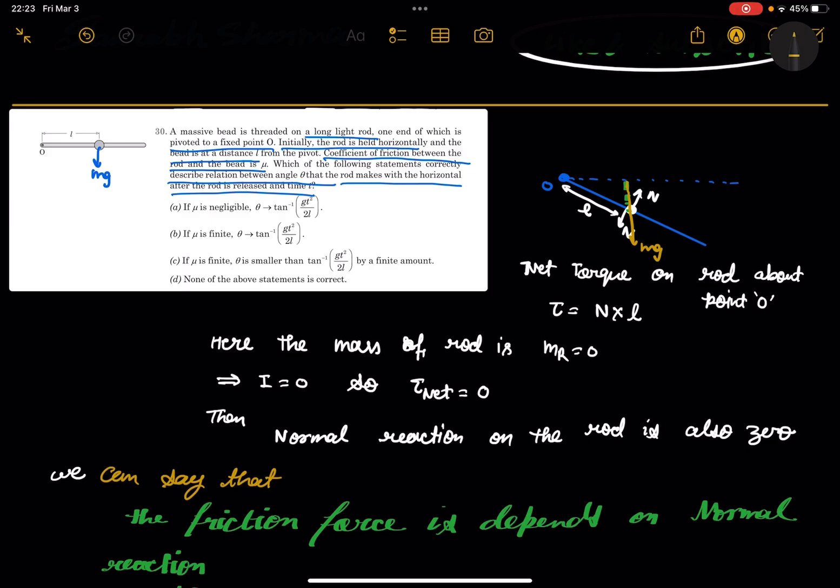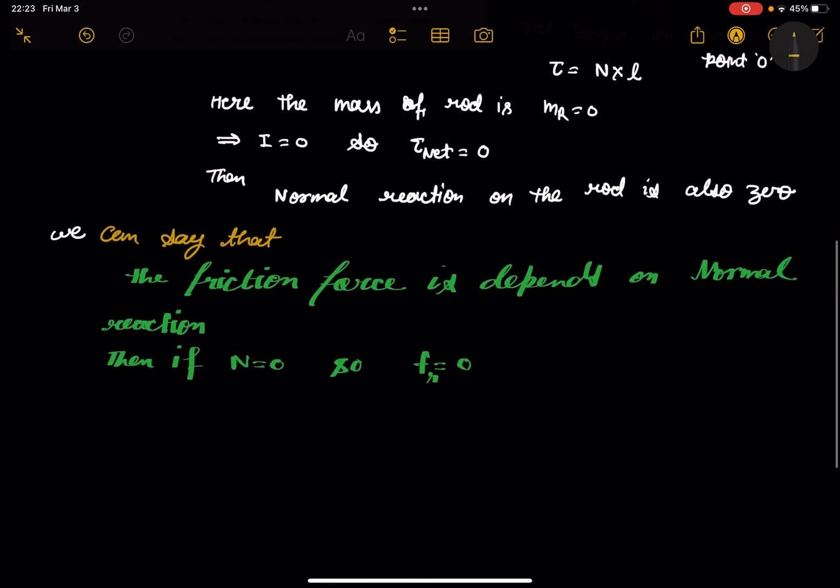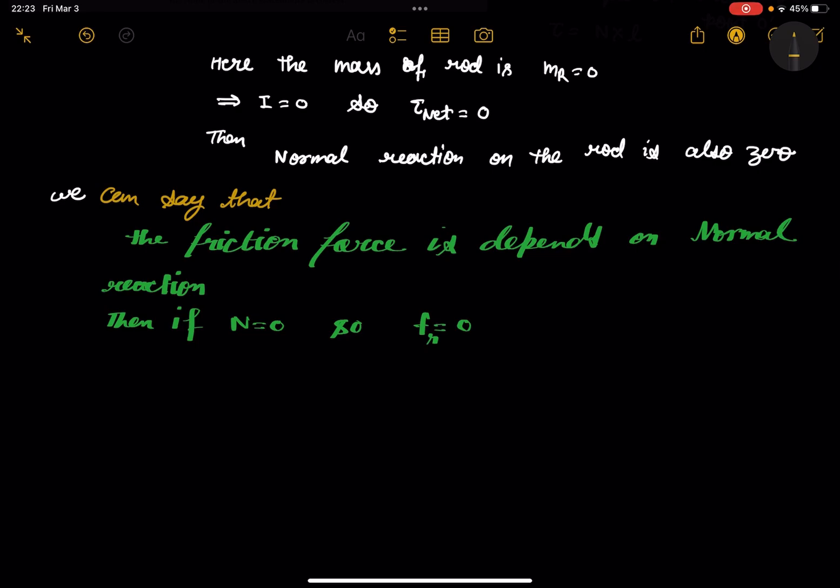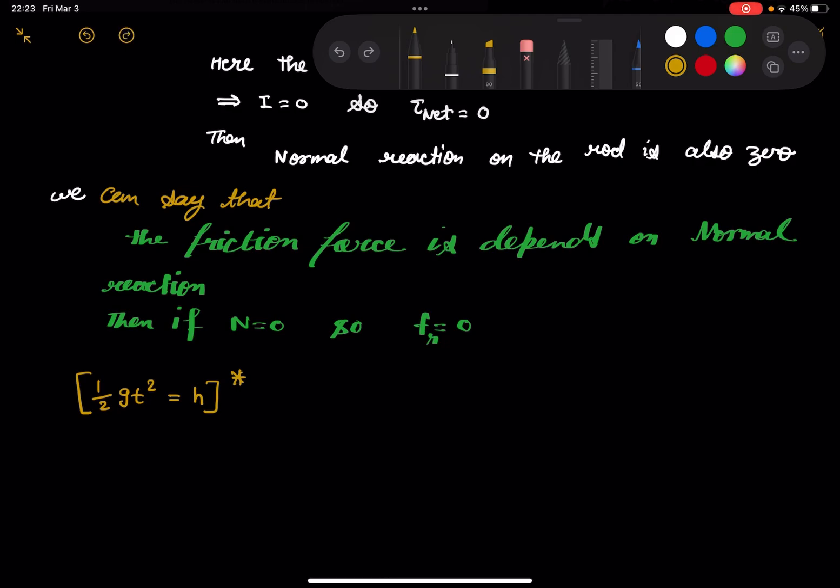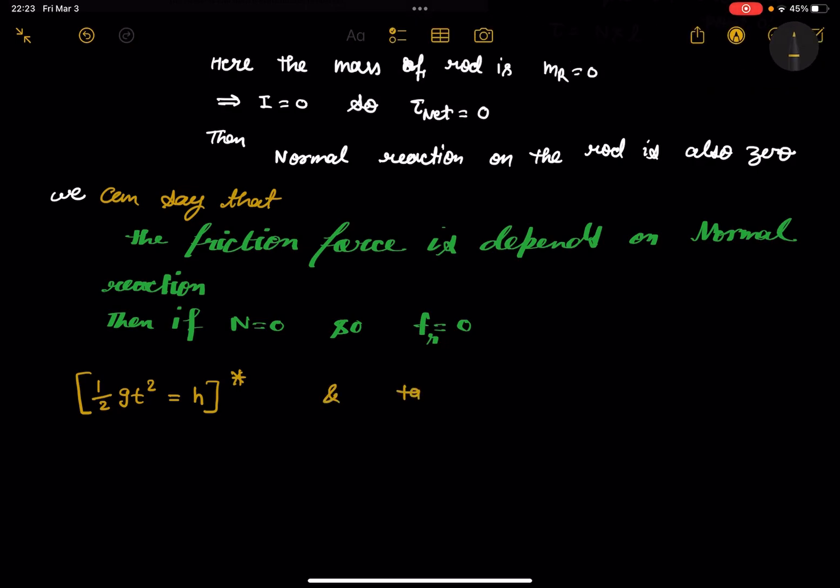So this line is coming because of Mg, so this direction force is acting. So we can say that half of Gt square is equal to H. So H is equal to half of Gt square and tan theta.